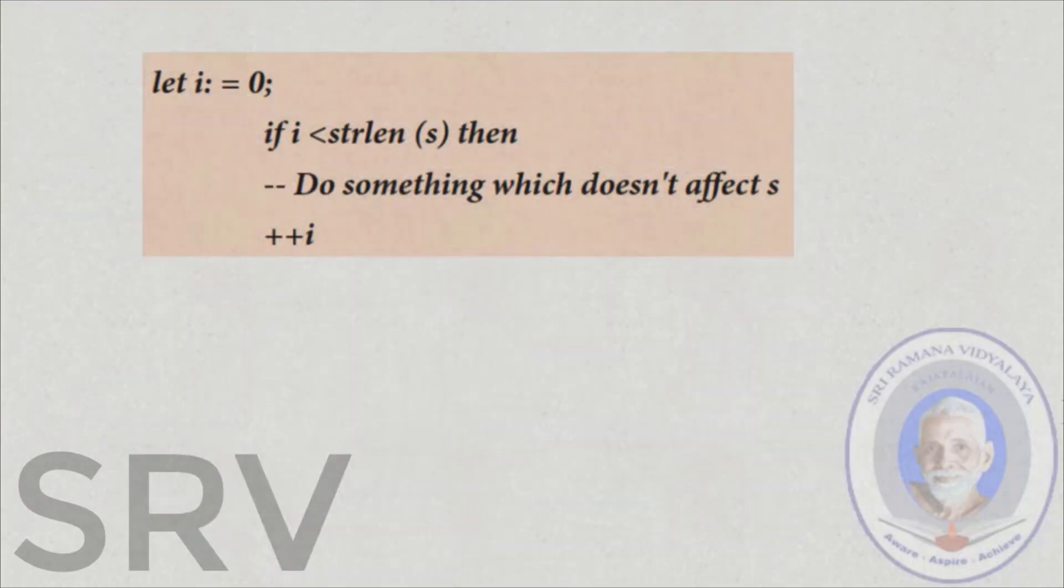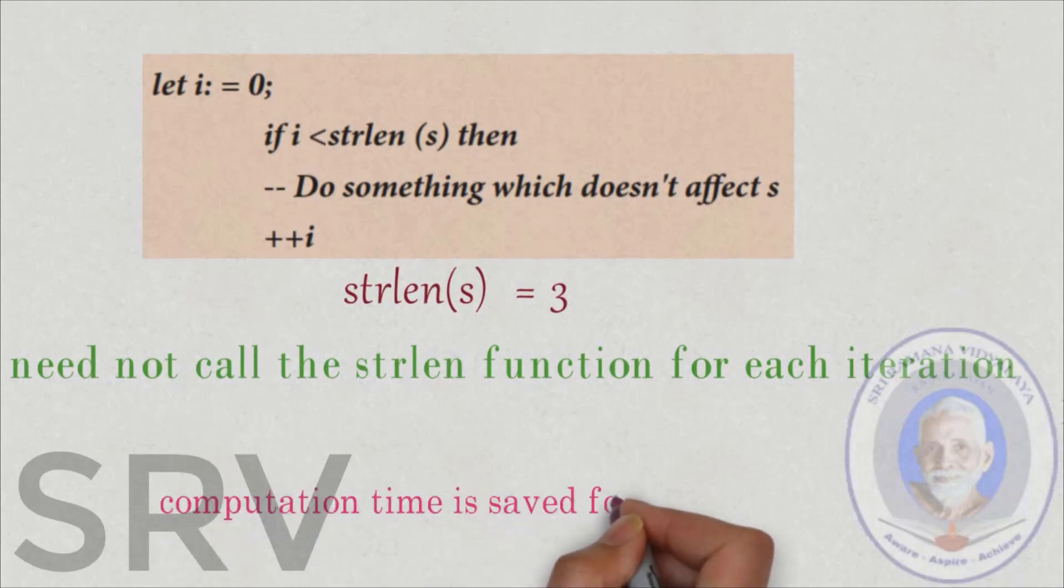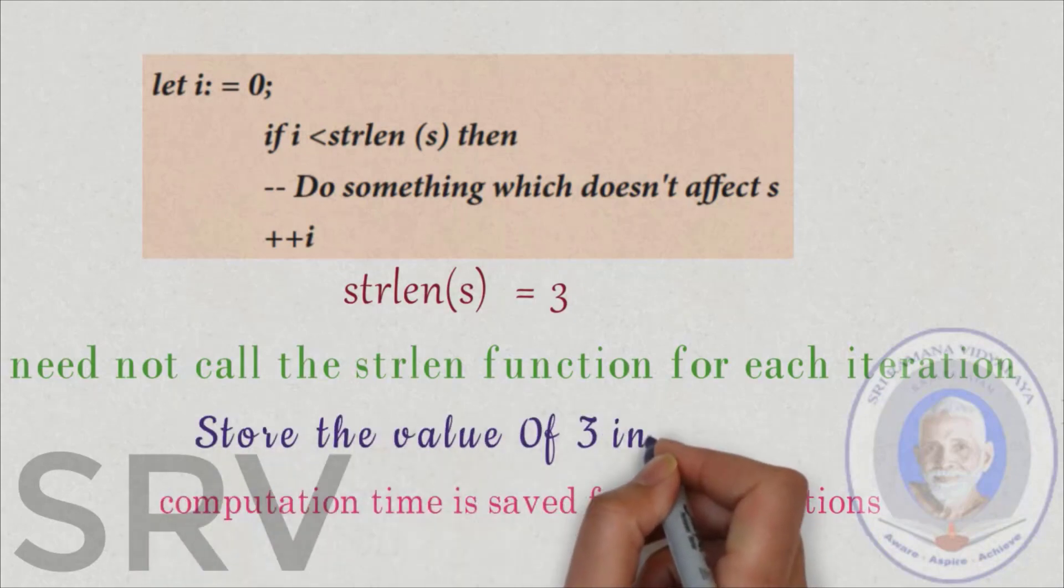We have seen advantage for pure function that the compiler calls the pure function only once. So, to understand we have taken the same function definition. We saw that this function definition undergoes a loop and each time strlen that is string length is checked. If it satisfies then the statement inside the loop executes and then i value is incremented. As strlen is a pure function so string length will hold 3 and the compiler does not call the function at each iteration. Instead it holds the value 3 for strlen.